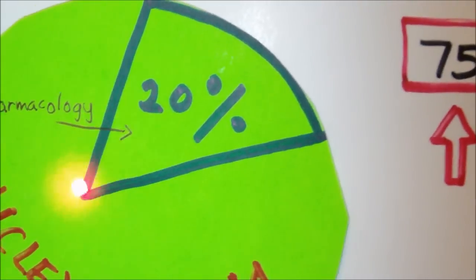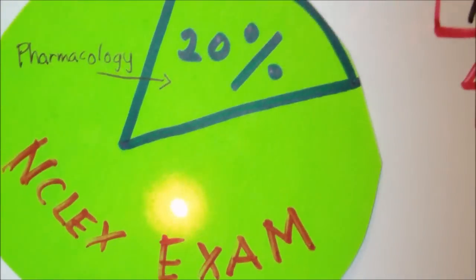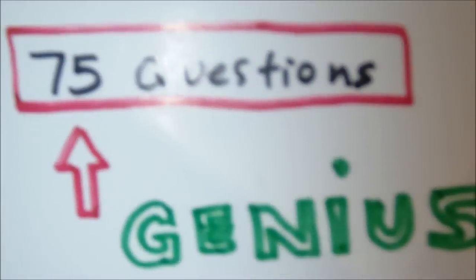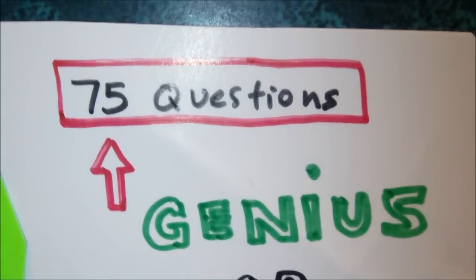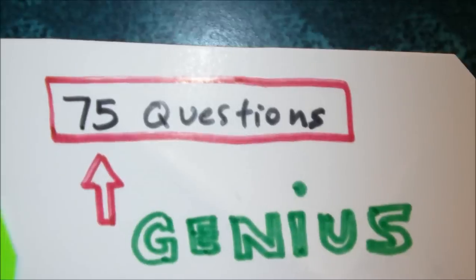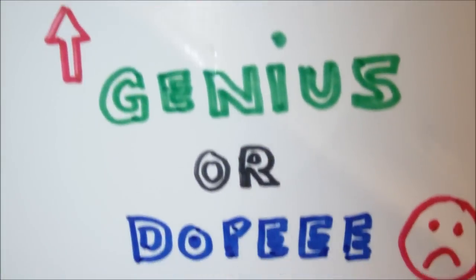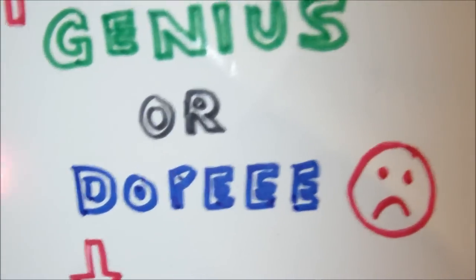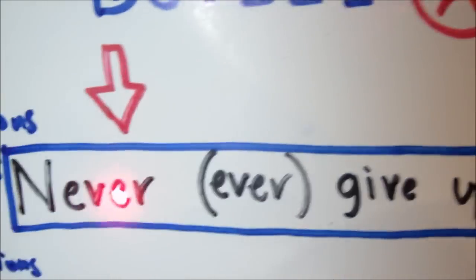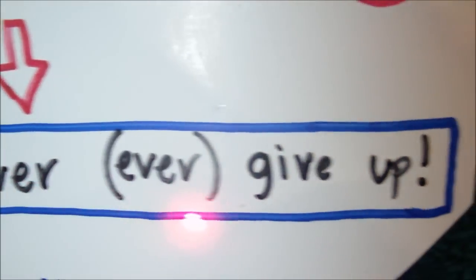That means that assuming we did really well and completed the minimum 75 questions, 15 would be related to pharmacology. And if we did double the questions, about 150 questions, that means we'll have about 30 pharmacological content questions in our NCLEX exam.